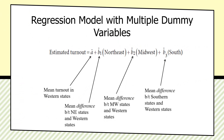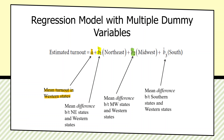Here's the model. A-hat will be the mean turnout in western states — they have a value of 0 on northeast, 0 on midwest, and 0 on south. B1 estimates the mean difference in turnout between northeastern states and western states, adjusting the intercept up or down. B2 is the mean difference between midwestern states and western states. B3 tells us the mean difference between southern states and western states. We have a base category and we estimate how much to adjust that base turnout based on each regional dummy.